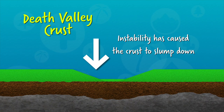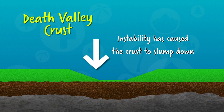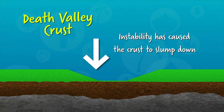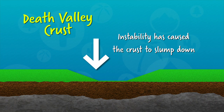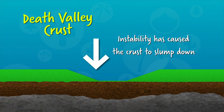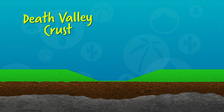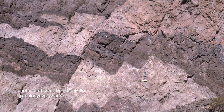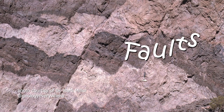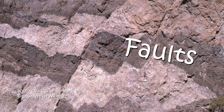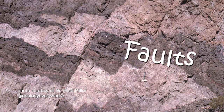All that stretching has made the crust a lot less stable and it's slumped down. In fact, you can see the faults where the crust has slipped downwards. That thin, slouchy crust is the reason why Death Valley's elevation is so low.